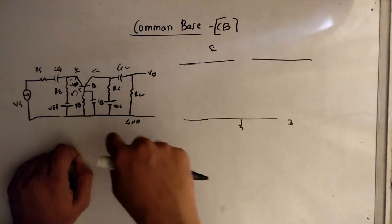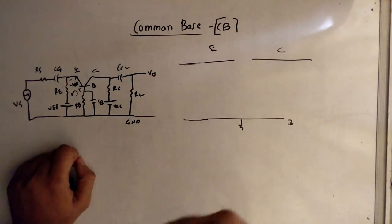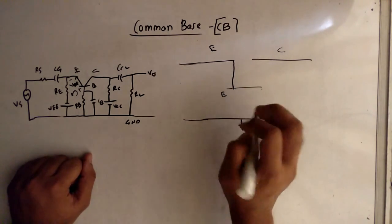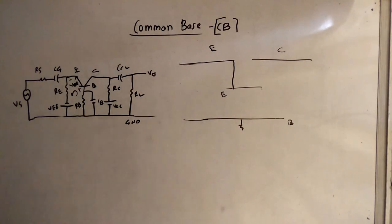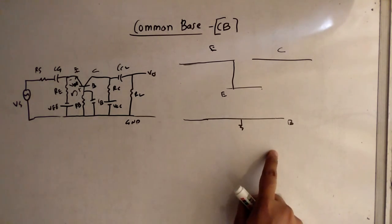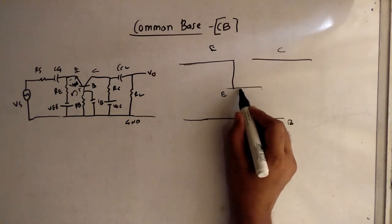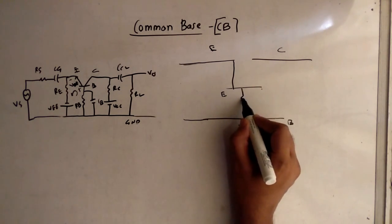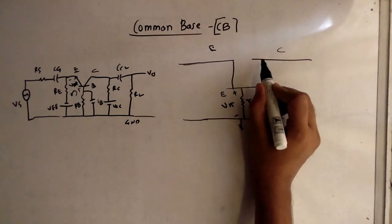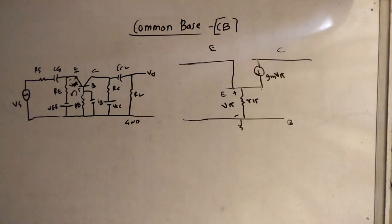The collector C is on the right-hand side. To make the circuit look simpler, I will draw one more E line and connect the two — both are the same lines. In the hybrid pi model, there is resistance R pi between B and E with voltage plus-minus Vpi, and a current source GM Vpi flowing from C to E.